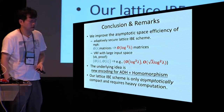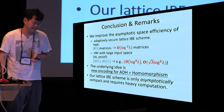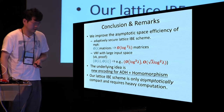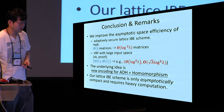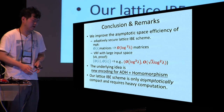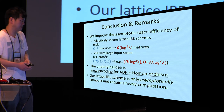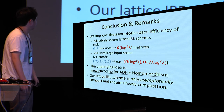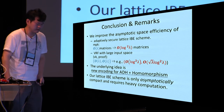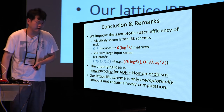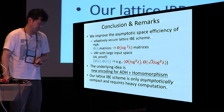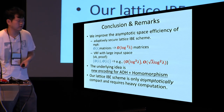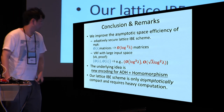In conclusion, we improved the asymptotic space efficiency of adaptively secure lattice IBE schemes and verifiable random function schemes with large input space. The underlying idea is to encode the secret randomness of the admissible hash function into a much shorter bit string and use some homomorphism. We remark that our lattice IBE scheme is only asymptotically compact and requires very heavy computation, so constructing a scheme efficient in practical parameter settings remains an open problem. Thank you for your attention.